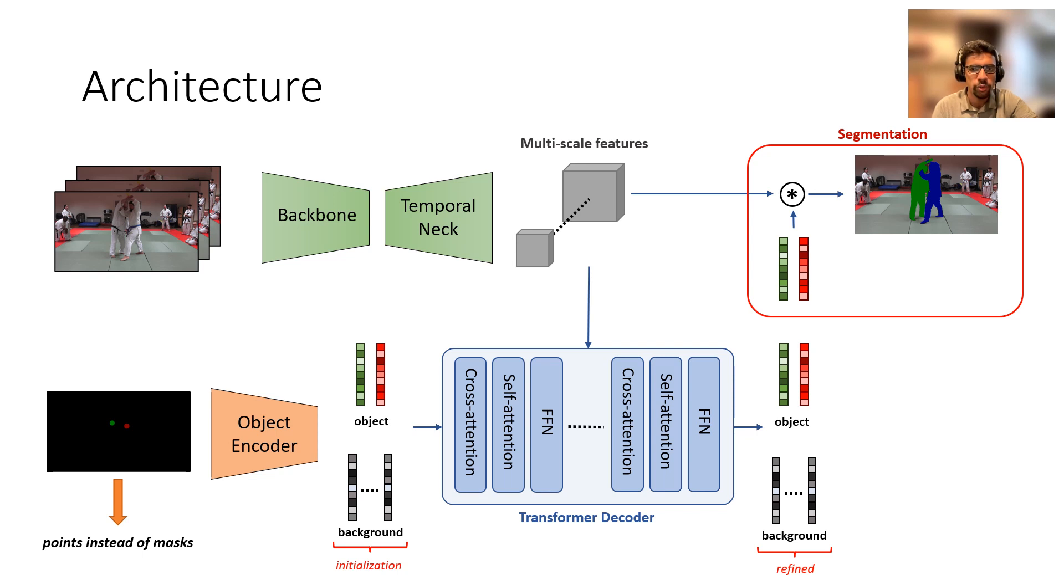So overall, Tarvis is flexible with respect to the type of guidance given for the object, whether it be a mask, a point or potentially even a bounding box.